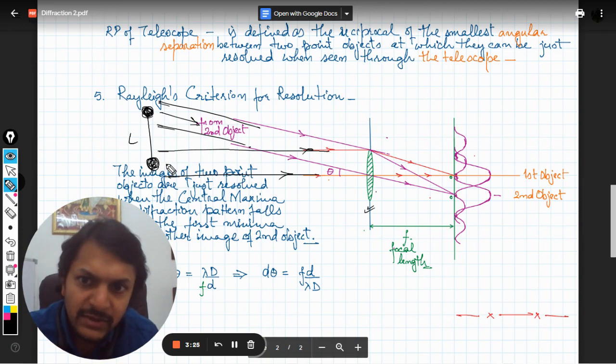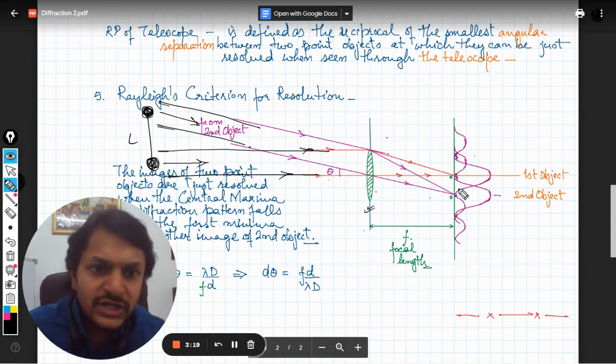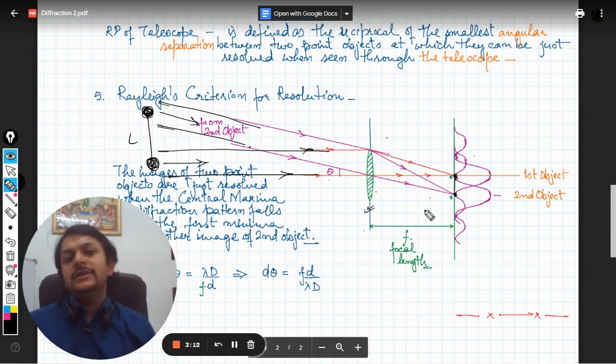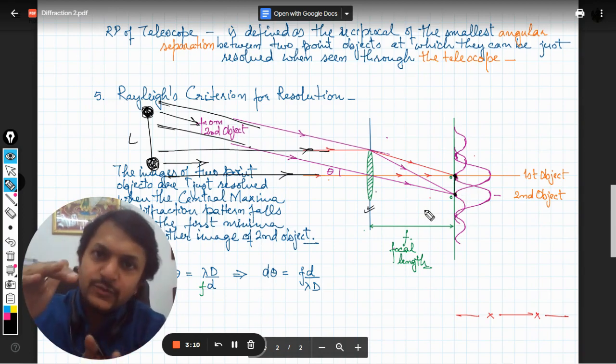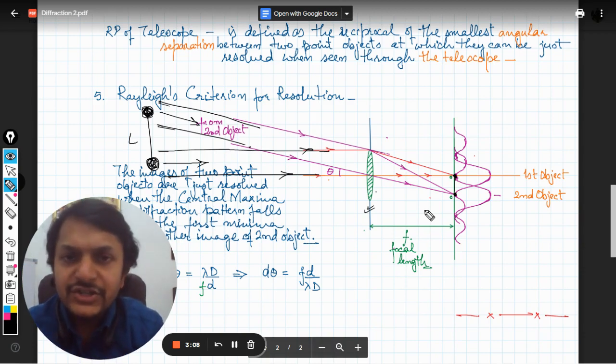This is what is happening. This side light is giving some light. This is also giving some light. And this is the lens and they are creating two different images. One image is at this point, another image is at this point.